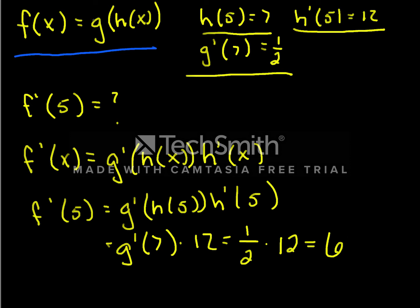So even though we didn't know the exact function for f or g or h, we just had a little bit of information, and that was enough to tell us what the derivative of f at 5 is, it will be 6.